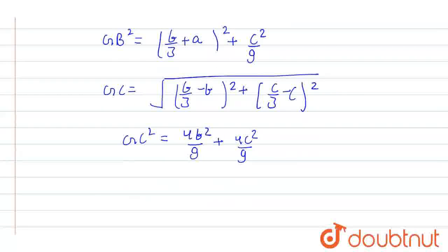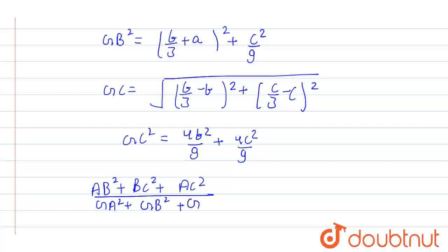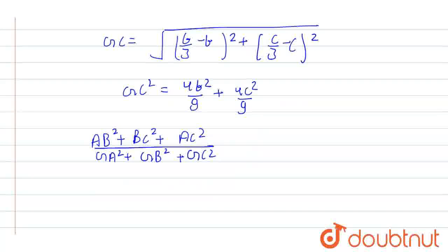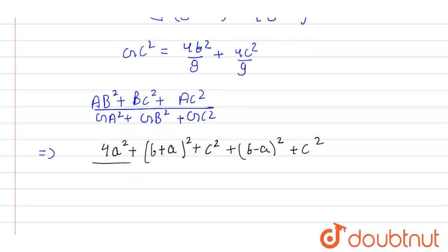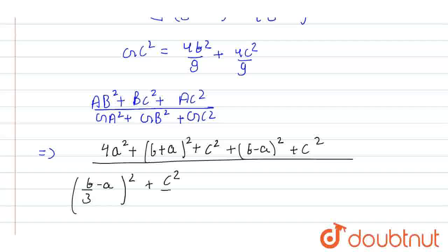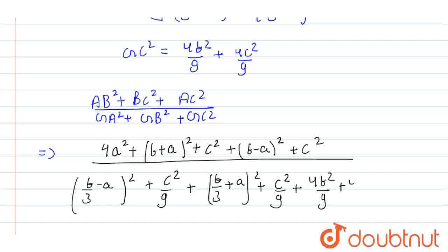Now, in the given question, we have to find the value of (AB² + BC² + AC²) / (GA² + GB² + GC²), and we have found all the values. We will now substitute: AB² = 4a², BC² = (b + a)² + c², AC² = (b − a)² + c², divided by GA² = (b/3 − a)² + c²/9, plus GB² = (b/3 + a)² + c²/9, plus GC² = 4b²/9 + 4c²/9.